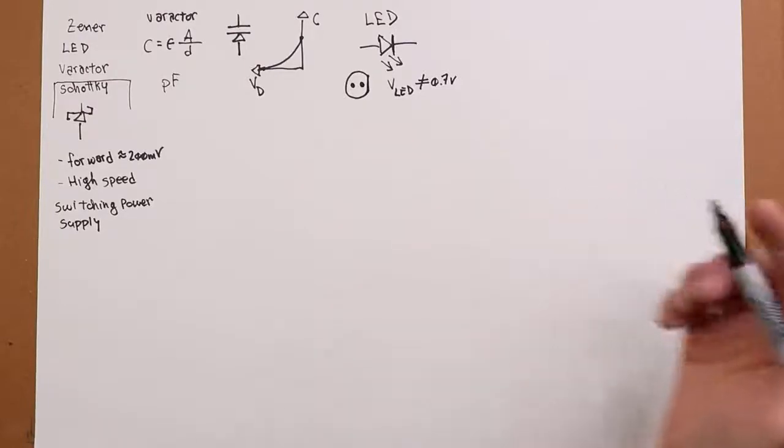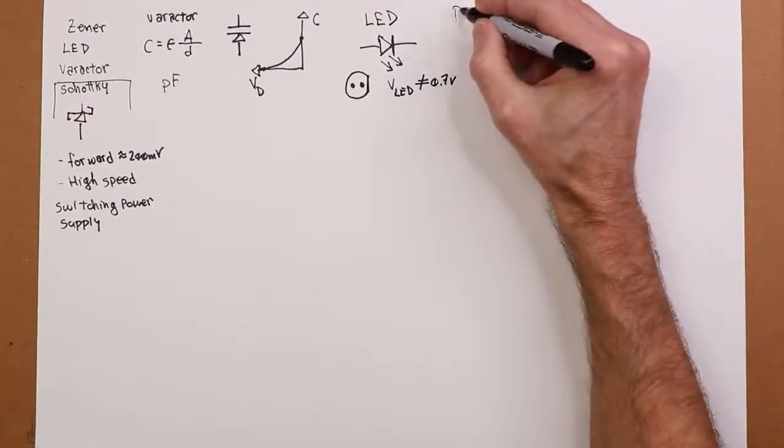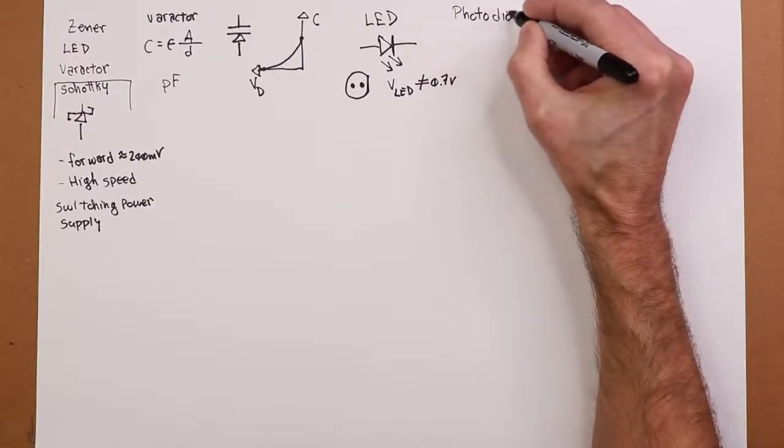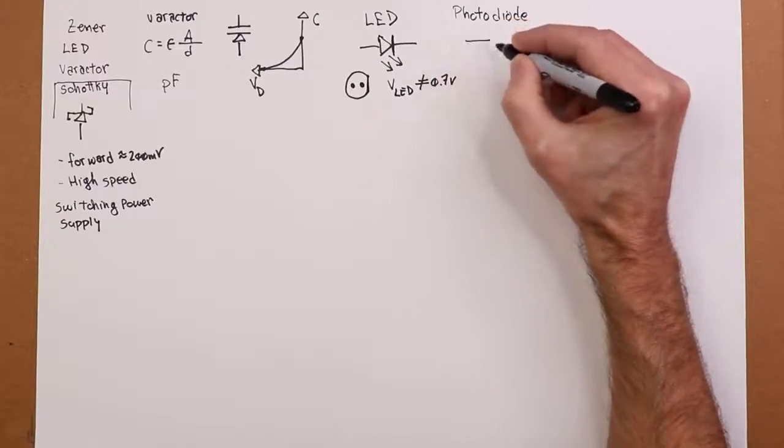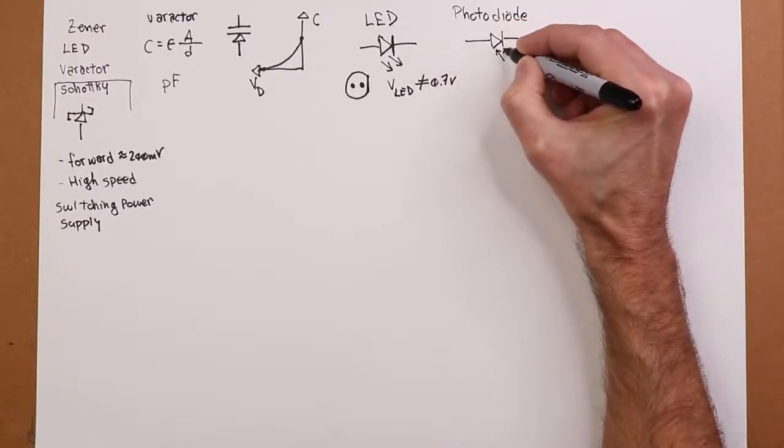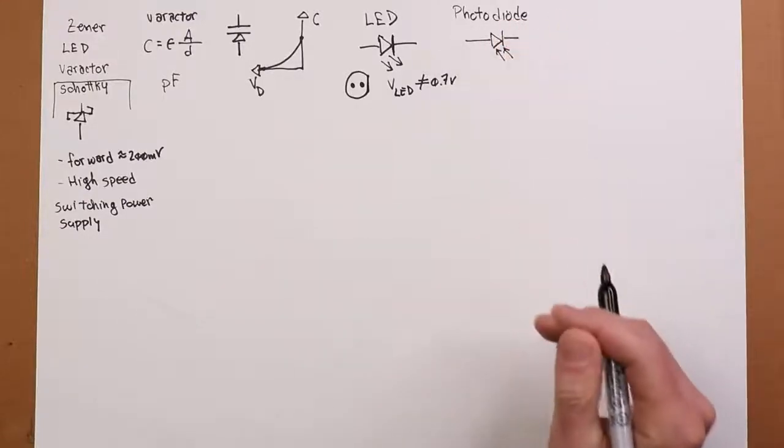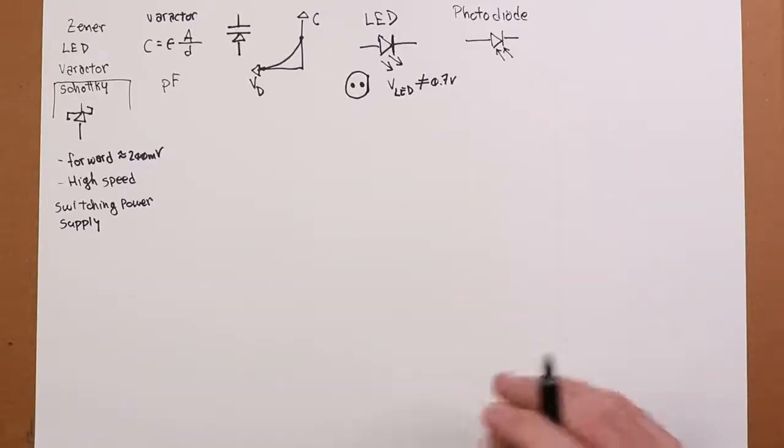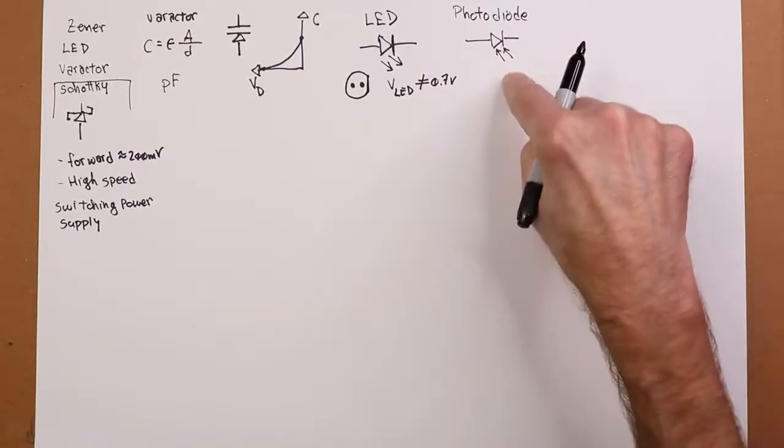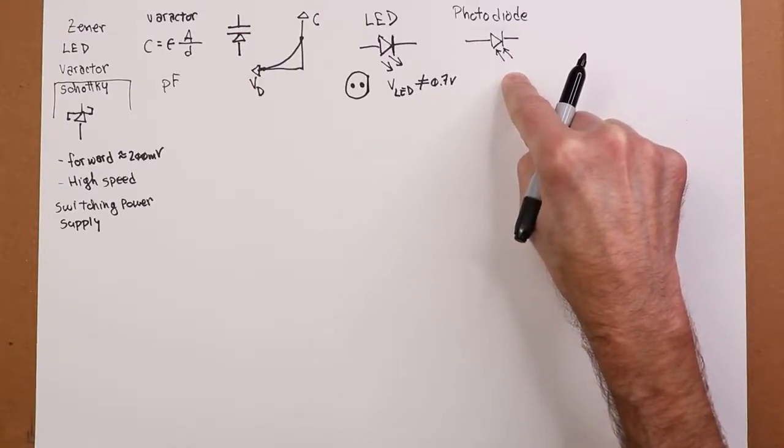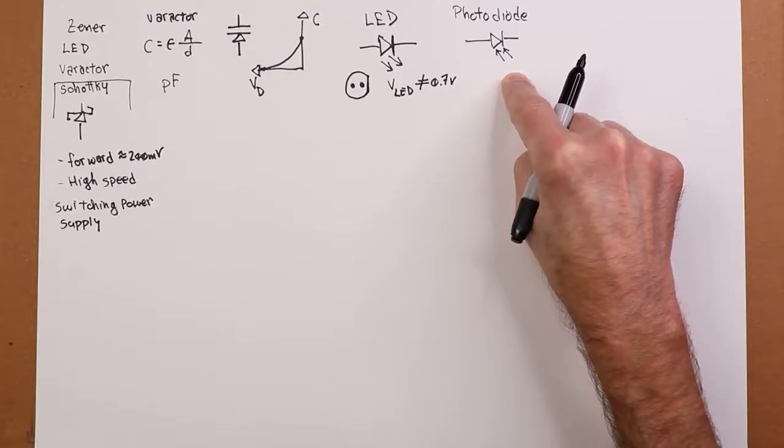So a photodiode is sort of the flip. The arrows go in. Essentially what happens is light strikes the photodiode and it produces a current. The more light there is, the more current you get.